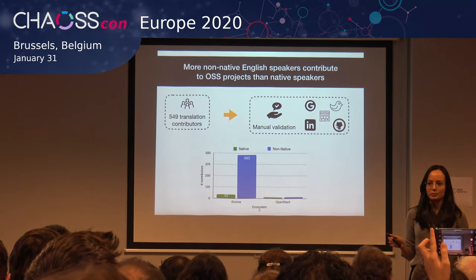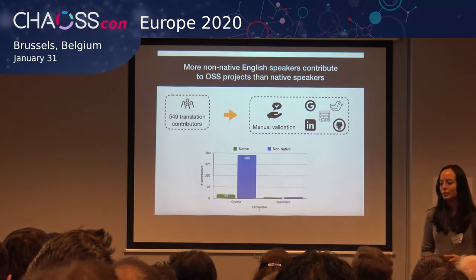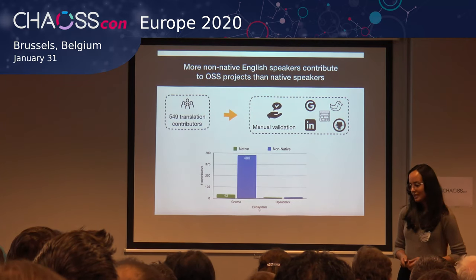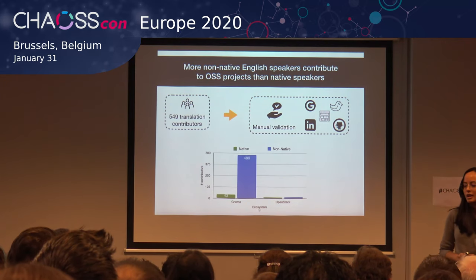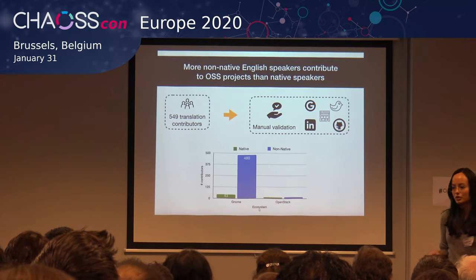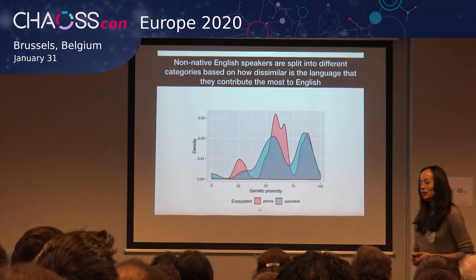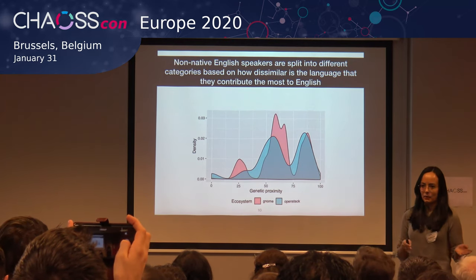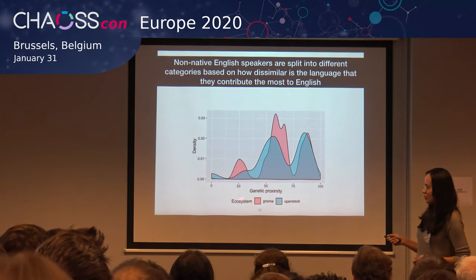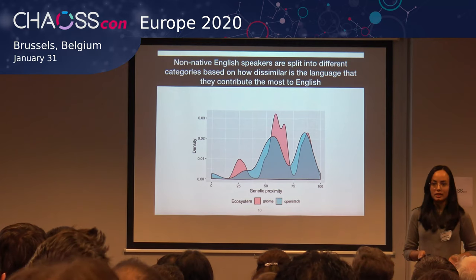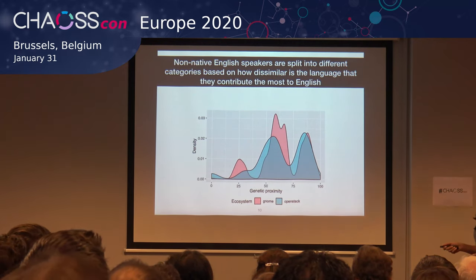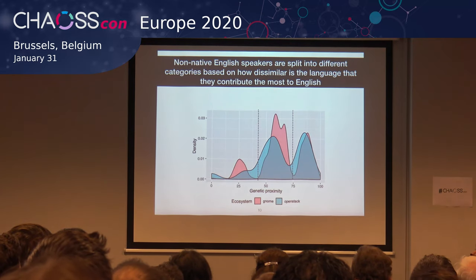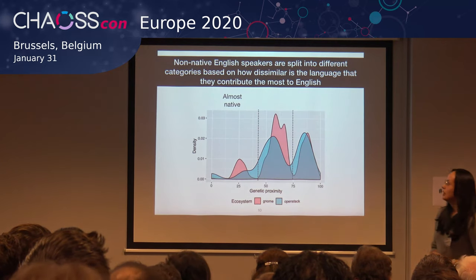We want to compare both groups to see whether it's easier or more difficult for someone to go from translation to source code. But since those numbers are very different, it's not a fair comparison. So we decided to split the group of non-native contributors based on how dissimilar the language they contribute the most is to English. We calculated something called genetic proximity — how similar to English the words in that language are. If the genetic proximity score is close to zero, the language is very close to English; if it's 100, it's very different. We have three clear peaks for both ecosystems, which means we can split our non-native English speaker dataset into three different categories. The first one we call almost native speakers.